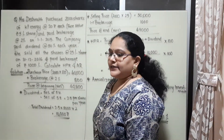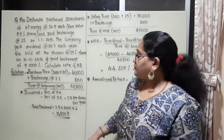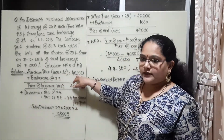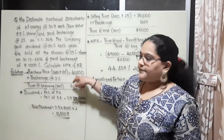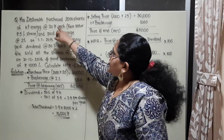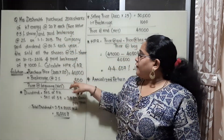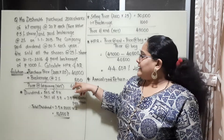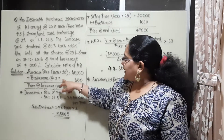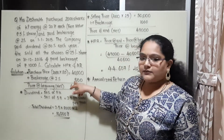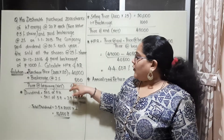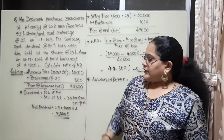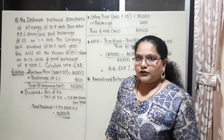The purchase price is 2000 shares into 20, that is 40,000. She paid brokerage of 2%, which is 800. So her beginning price becomes 40,800. This is a very simple calculation.